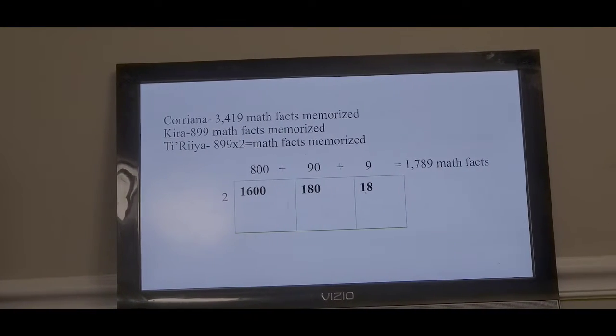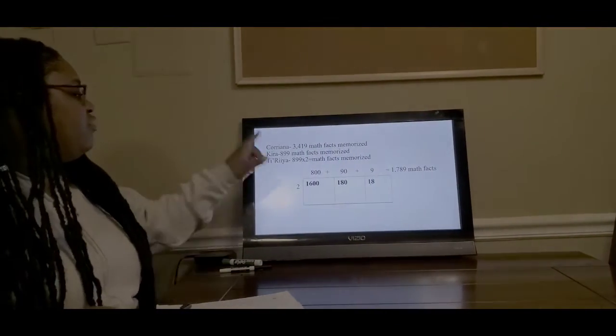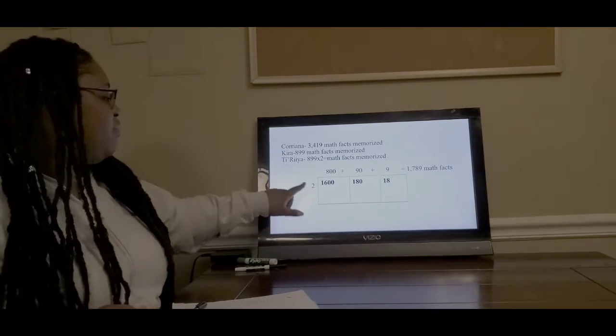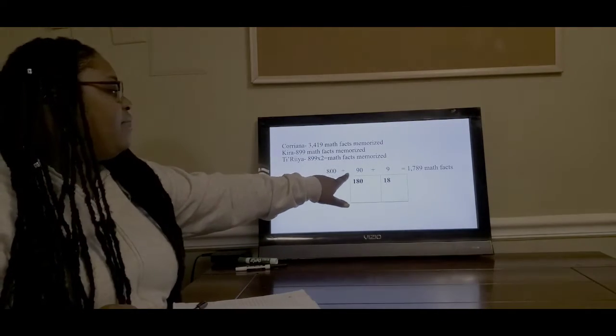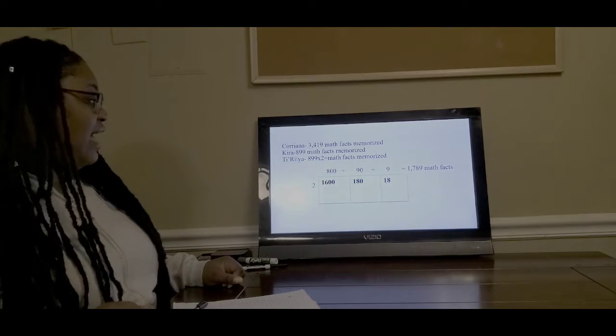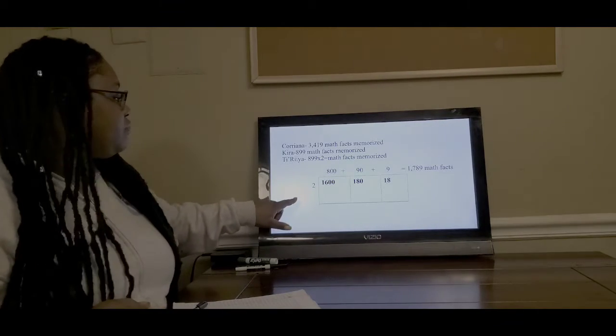In order to solve this, I started my area model. I did 2 times 899, and I spread it out as 800 plus 90 plus 9, which would give me 899. I used my area model to solve each square.